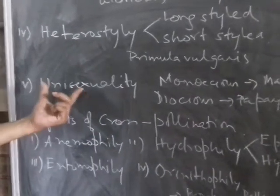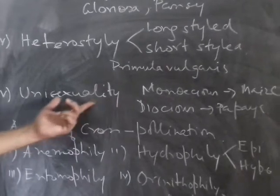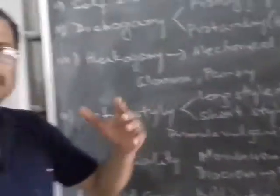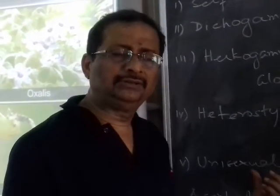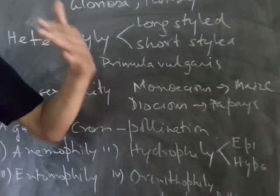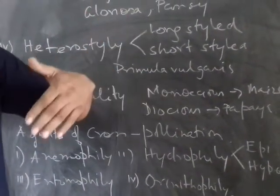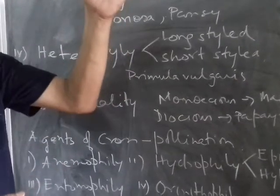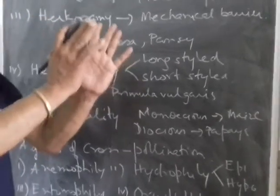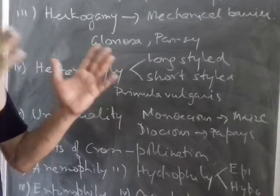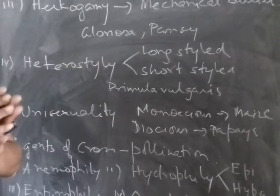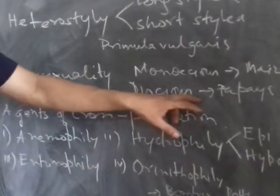Unisexuality is another contrivance. Monoecious plants, like maize, have both male and female flowers on the same plant — the male tassel at the top and the female cob at the bottom — which can reduce self-pollination. Dioecious plants, like papaya and date palm, have entirely separate male and female plants; the male plant never bears fruit, and this always leads to cross-pollination.